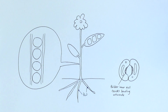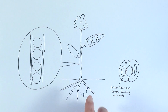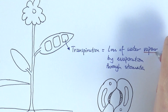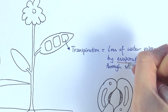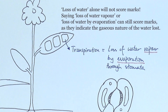We've got a flower with roots underneath that absorb water from the soil, and leaves with the xylem going up into them, where there are different cells. Transpiration is the loss of water vapor by evaporation through the stomata. It's important to note the words 'vapor' and 'evaporation' — many people lose marks by saying transpiration is the loss of water. That is not correct, because water vapor is a gas whereas water itself is a liquid. It must be the loss of water vapor by evaporation through the stomata.